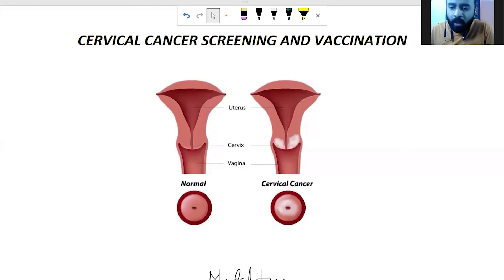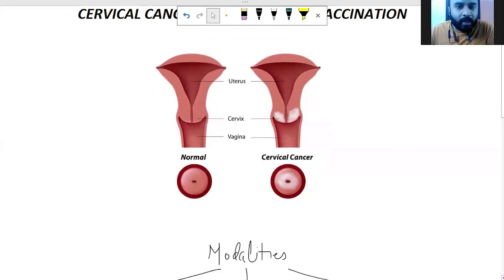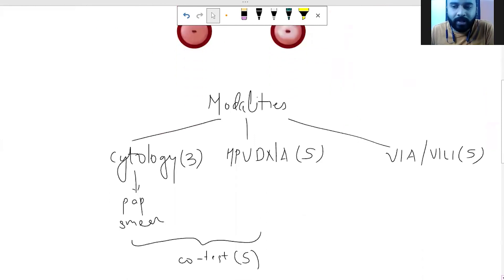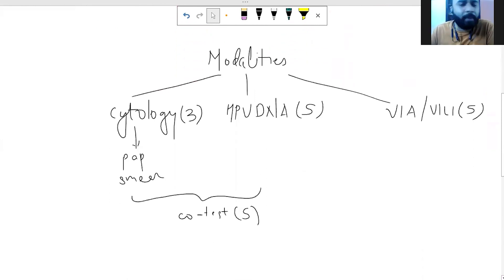To begin with, these guidelines have been taken from FOXY's GPCR. GPCR is the good clinical practice guidelines from FOXY. FOXY is the association that controls all the gynec societies in India. So it advises three main modalities for screening, cervical cancer screening. The first one is cytology.